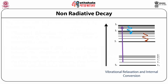Non-radiative decay: the decay of the excited electron without any radiation is termed as non-radiative decay. There are a number of processes by which an electron decays non-radiatively, including vibrational relaxation, internal conversion, external conversion, and inter-system crossing, which will be discussed in the next slides.